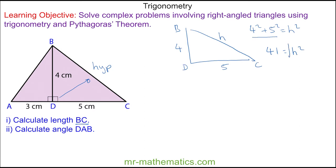So we'll take the square root of both sides — the square and the square root will cancel — so the hypotenuse is approximately 6.4 centimetres.